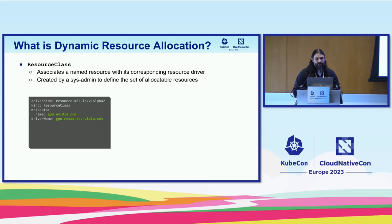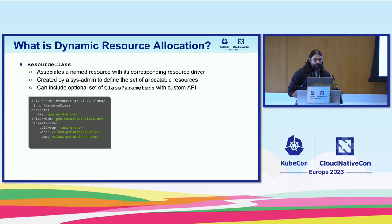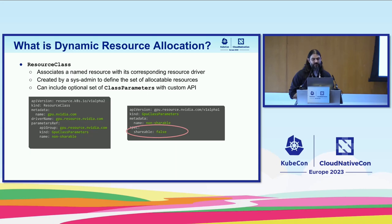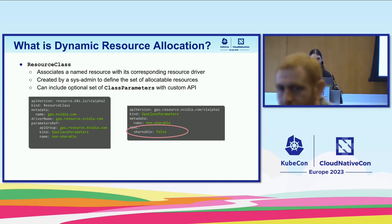The first concept is the resource class. A resource class basically associates a named resource with its corresponding resource driver. The resource class gpu.nvidia.com is served by a driver named gpu.resource.nvidia.com. Along with resource classes, you can associate an optional class parameters object — with a completely custom API you define as the resource driver developer. For NVIDIA GPUs, this class parameters object lets you specify, for example, that GPUs allocated by this resource class cannot be shared, limiting shared access.